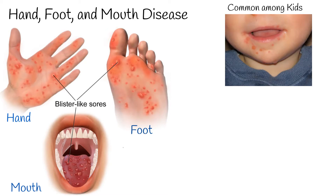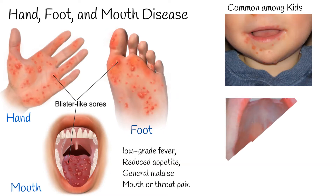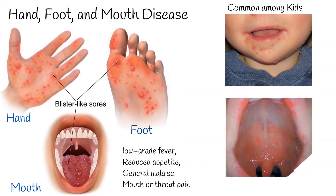Hand, foot, and mouth disease can start with a low-grade fever, reduced appetite, and general malaise. The most common presenting symptom is usually mouth or throat pain secondary to the enanthem.